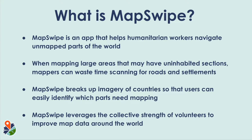So what is MapSwipe? MapSwipe is an app that helps humanitarian workers navigate unmapped parts of the world. When mapping really large areas that may be largely uninhabited, mappers can waste a lot of time scanning for buildings and roads inside of the mapping cells. MapSwipe uses satellite imagery of countries and breaks it up into manageable chunks so that people like you and me can easily identify which parts need mapping. MapSwipe leverages the collective strength of volunteers to help improve map data across the world.